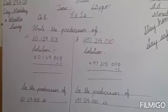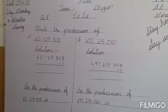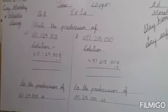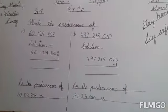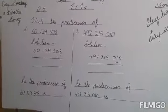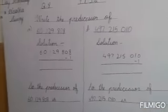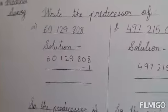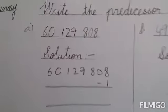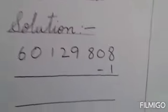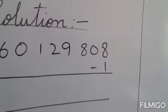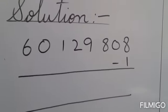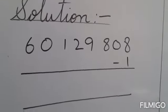Now we have to do question number 8. The question is: write the predecessor of. Some numbers are given and you have to write the predecessor. Do you remember what a predecessor is? The number that comes just before another number is called the predecessor — ek number se bilkul pehle wala number. How do we find that number? We find it by subtracting 1 from the number.